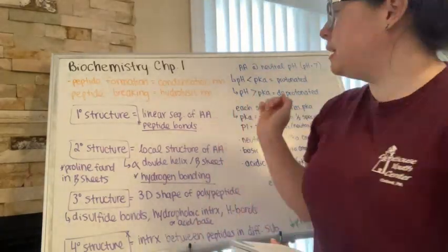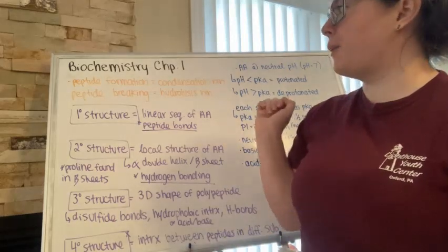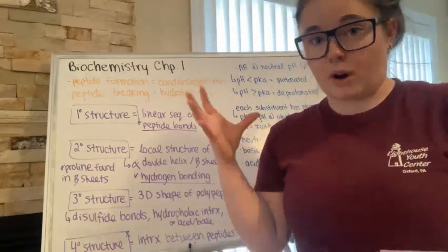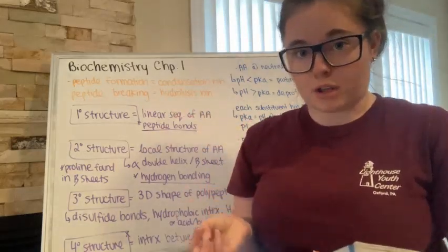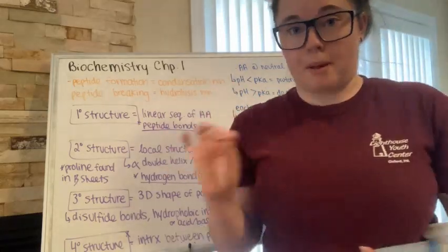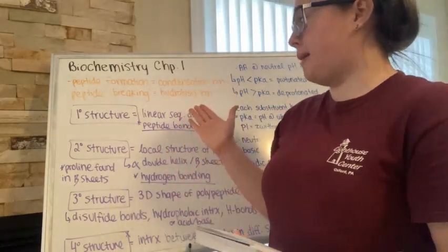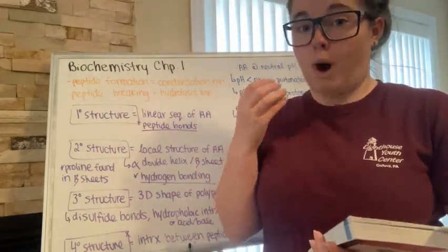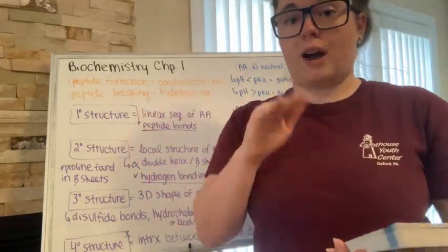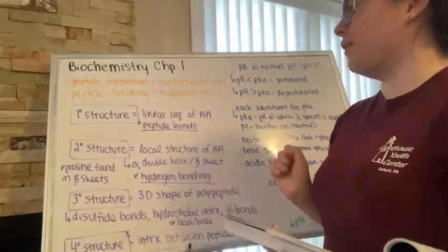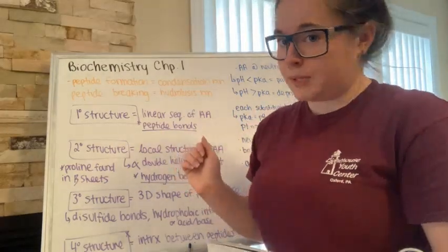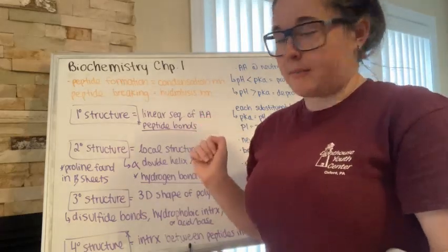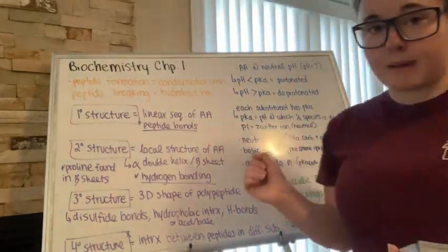As we continue through chapter one, we have peptide formation, which again is through condensation or dehydration reaction because you are removing a water molecule. To break a peptide, this would take a hydrolysis reaction, using water to break the bond. We also have different structures for our proteins — the primary structure is the linear sequence of amino acids, held together by peptide bonds.